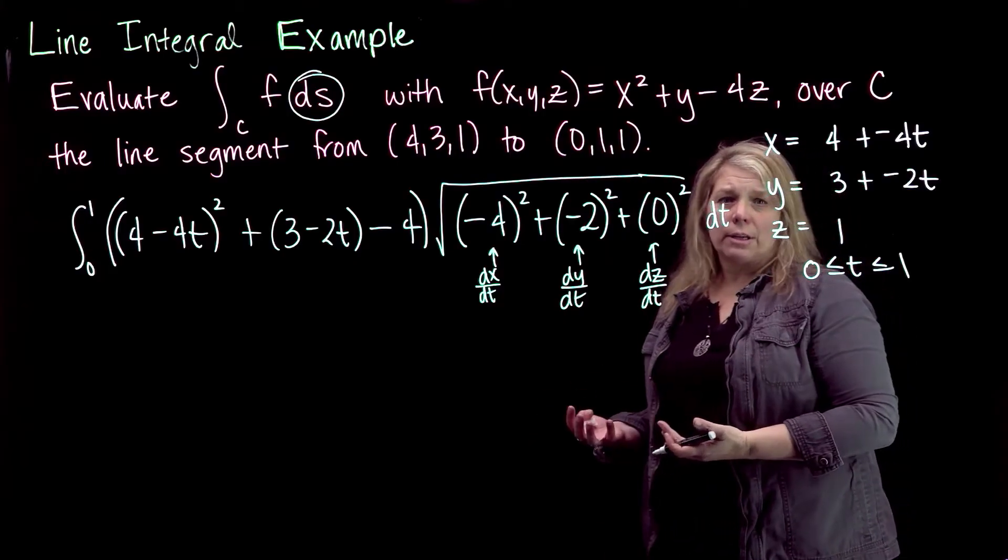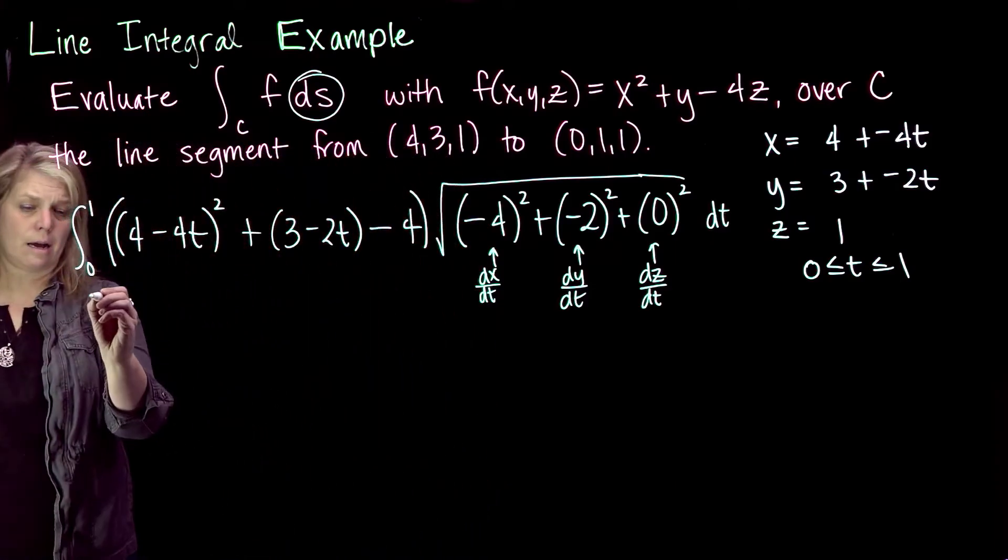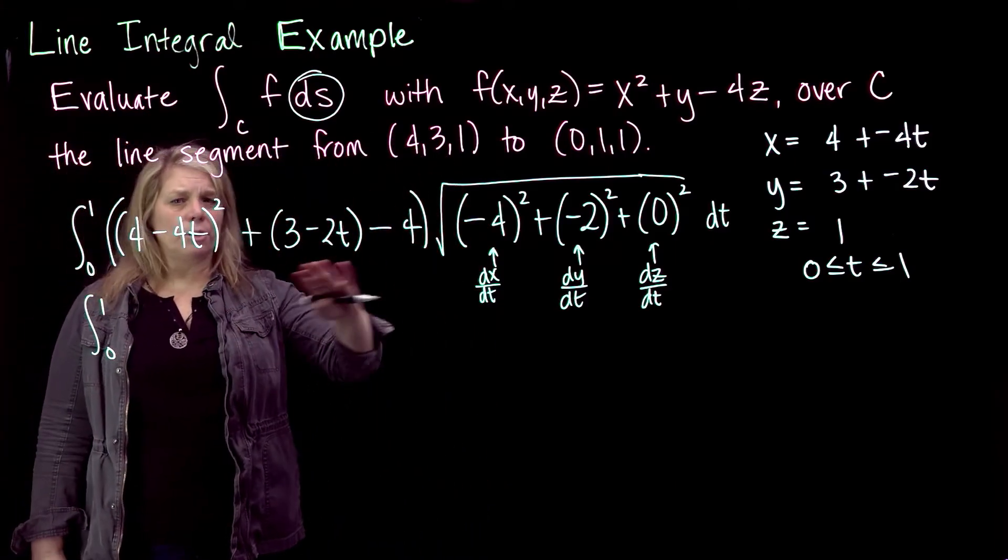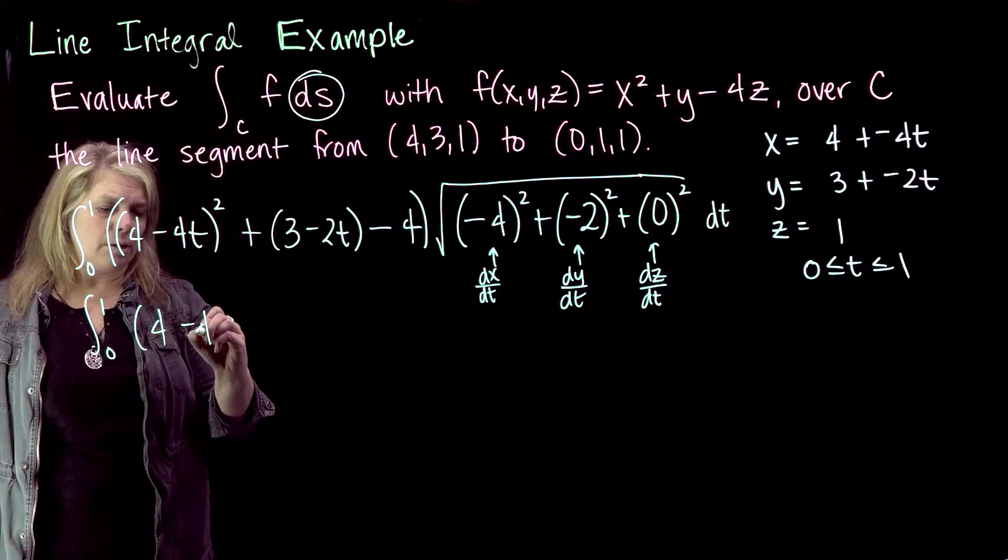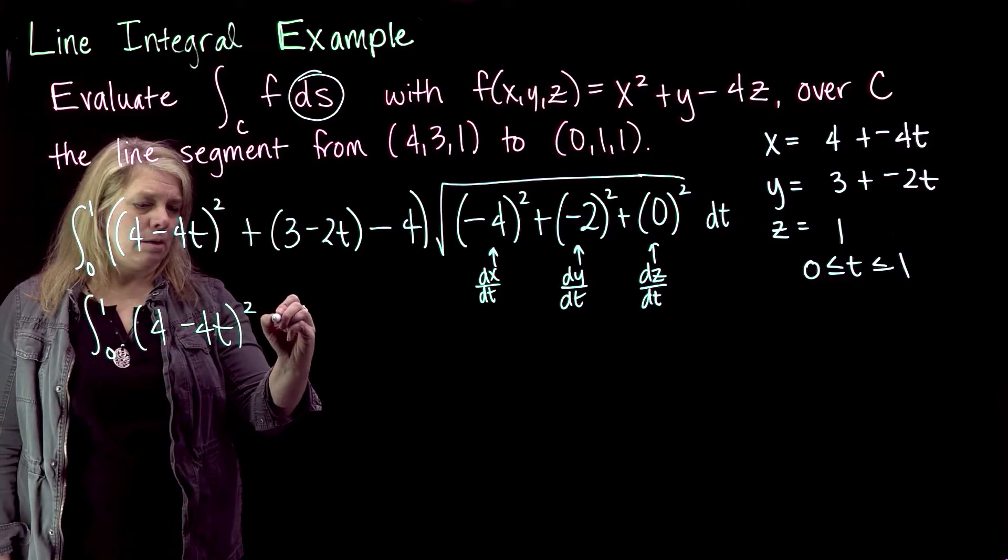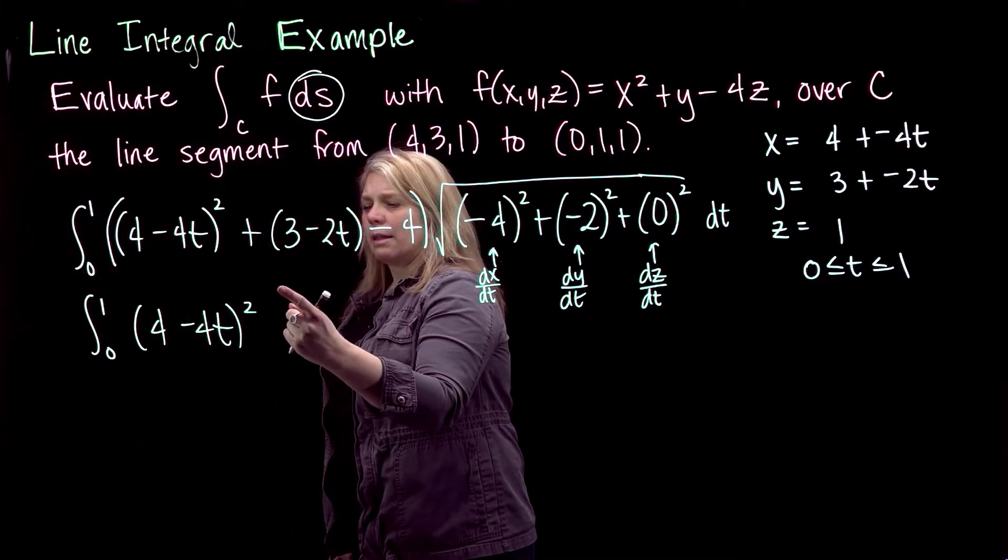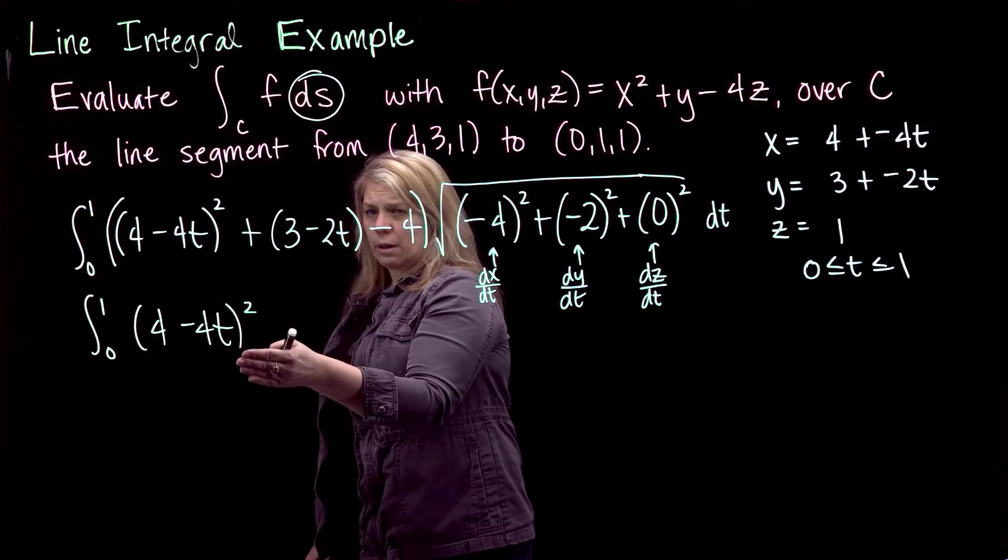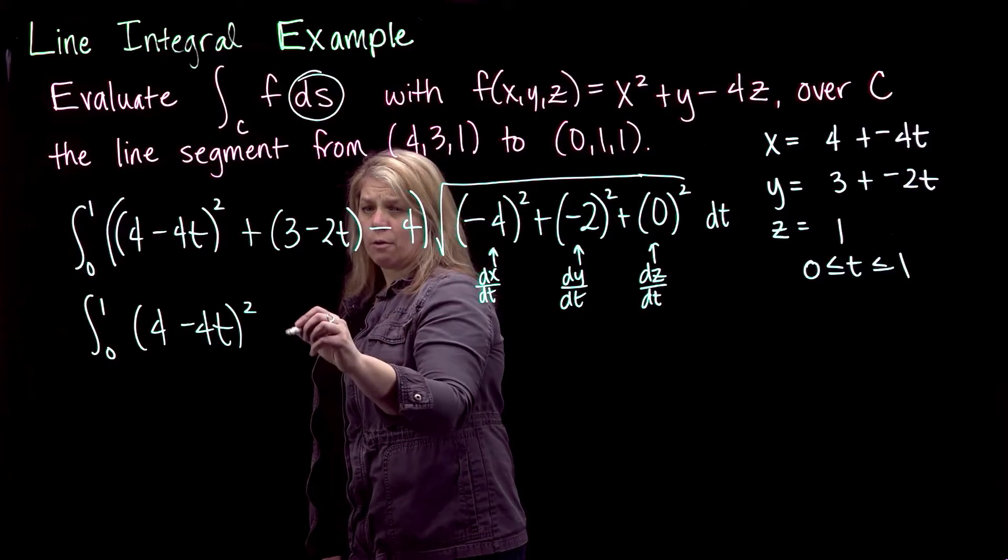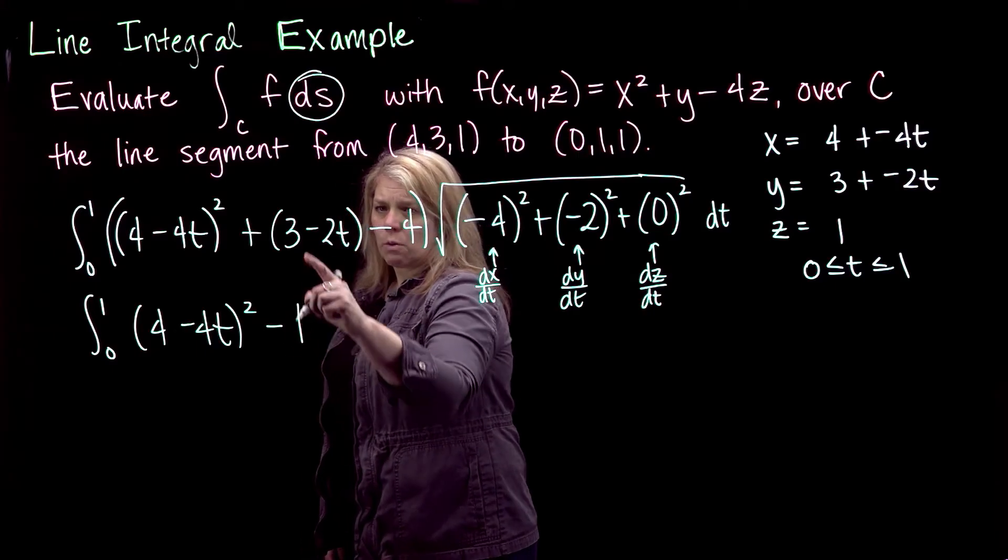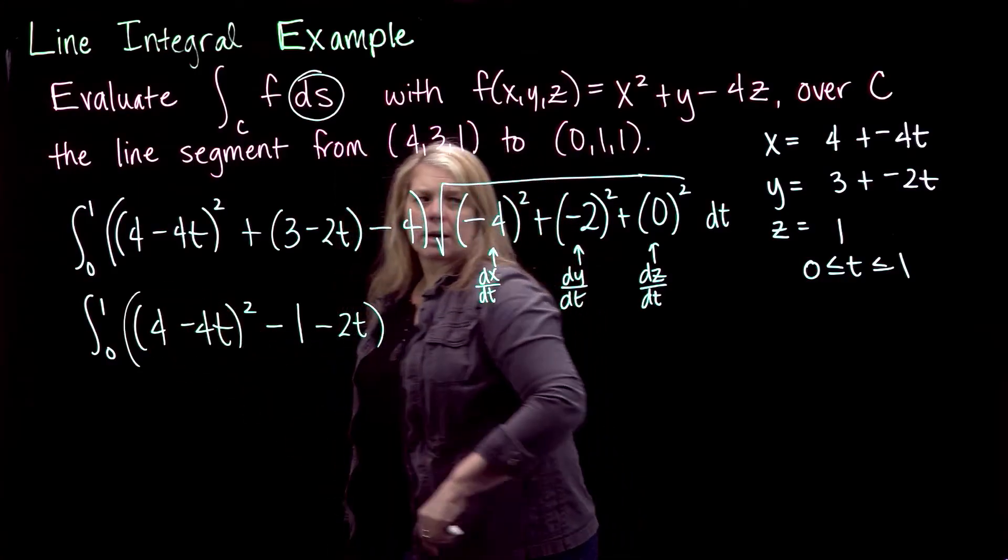Okay, from here it's essentially a calc 1 problem. So from here it shouldn't be too bad, I might skip some steps here. I'm going to go ahead and do this integration. There's different ways that you might choose to do this. I'm going to go ahead and leave this as the quantity squared, instead of expanding that all out and do a little u substitution with that integration. Here I'm going to go ahead and combine my 3 and my negative 4 to make that minus 1 minus 2t. That's the function I'm going to integrate.